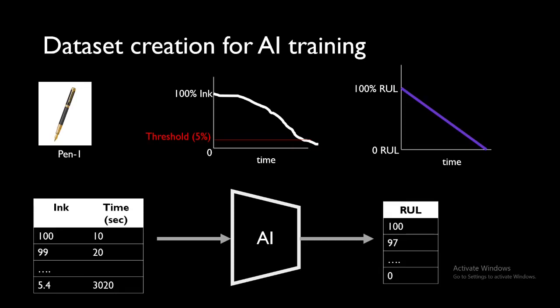Our target is remaining useful life. In the remaining useful life we see during the starting of the life we have remaining useful life as 100, then 97, it keeps on going, and at the last it's zero. This is our input, this is our output, and it's a very simple straightforward regression problem.